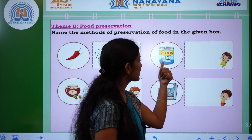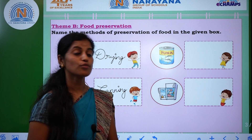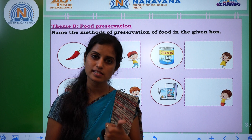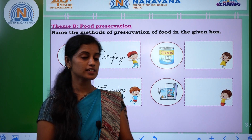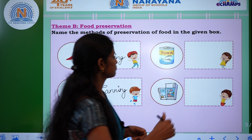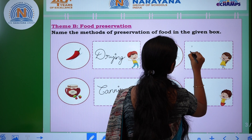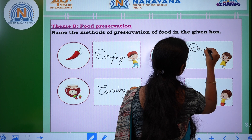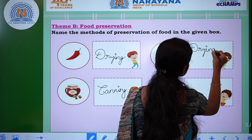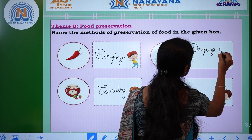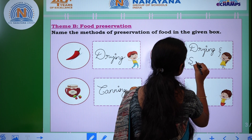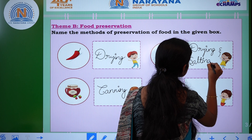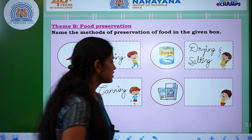Now move on to the next one — fish. We can preserve fish in two methods: one is the drying method, another one is the salting method. Drying — D-R-Y-I-N-G — and salting — S-A-L-T-I-N-G.